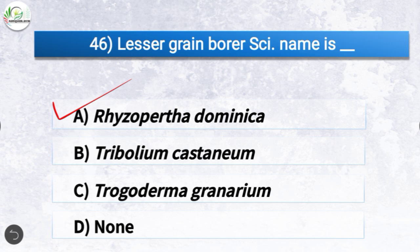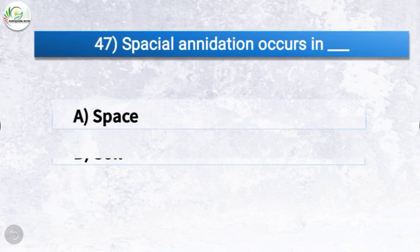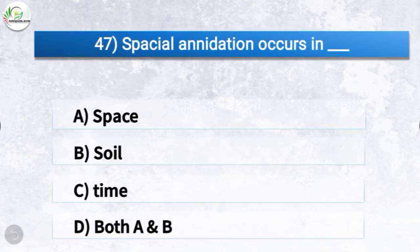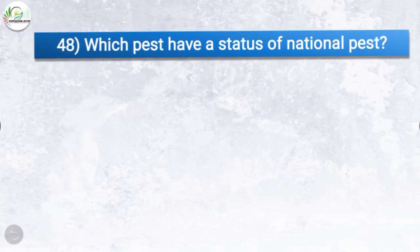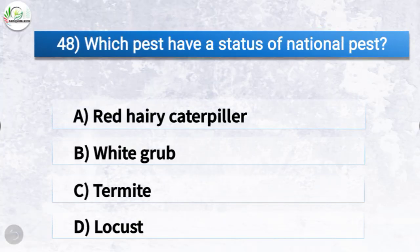Question number forty-seven: spatial nidation occurs in which of the following? The options are space, soil, time, or both A and B. The correct answer is option B, both A and B, which are space and soil. So spatial nidation occurs in space and soil.